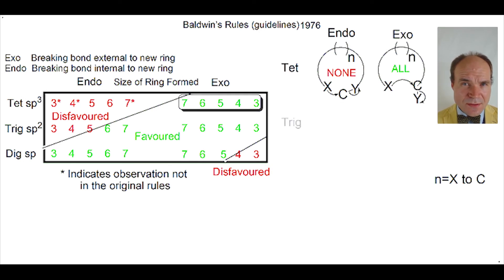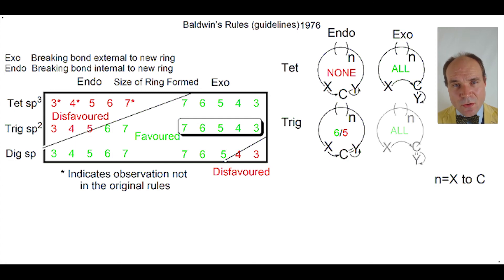Let's move on to trig. Trig endo is partially favoured and partially unfavoured. The trig endo five-membered ring is unfavoured, but the trig endo six-membered ring is favoured. From endo, let's look at exo. Trig exo is all favoured.